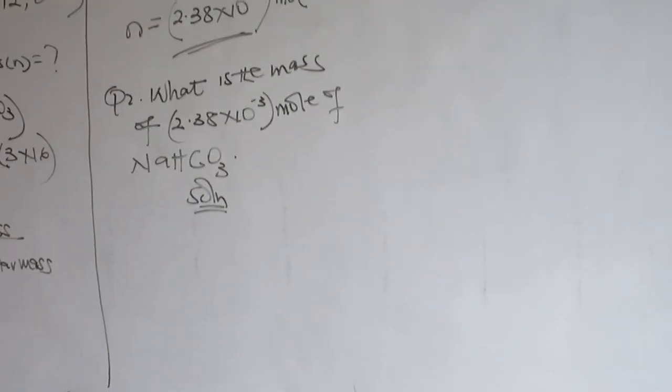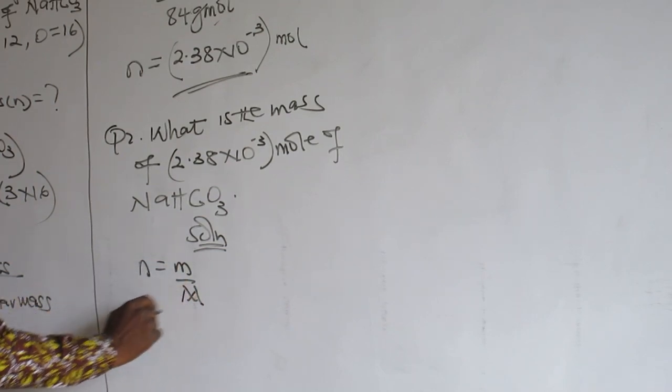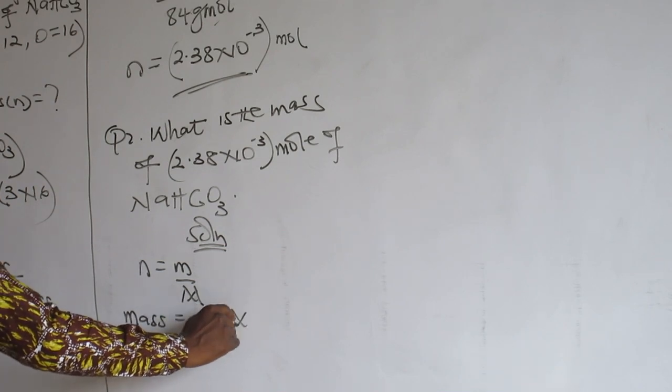Okay. So my molar mass is already known. We know it, right? So I put number of moles equals mass over molar mass. So mass equals number of moles times molar mass.